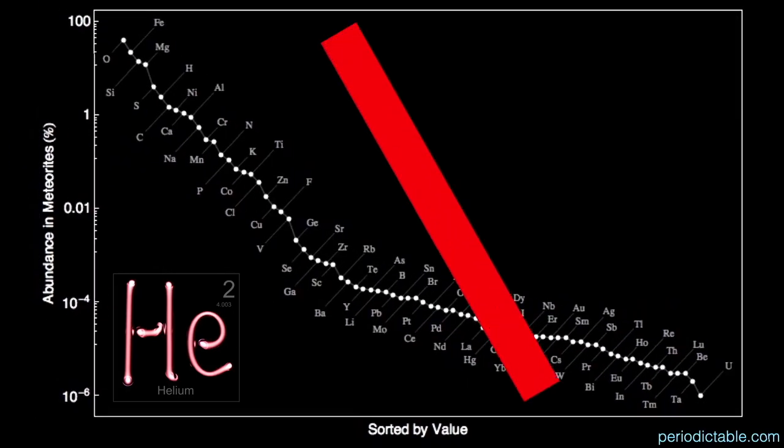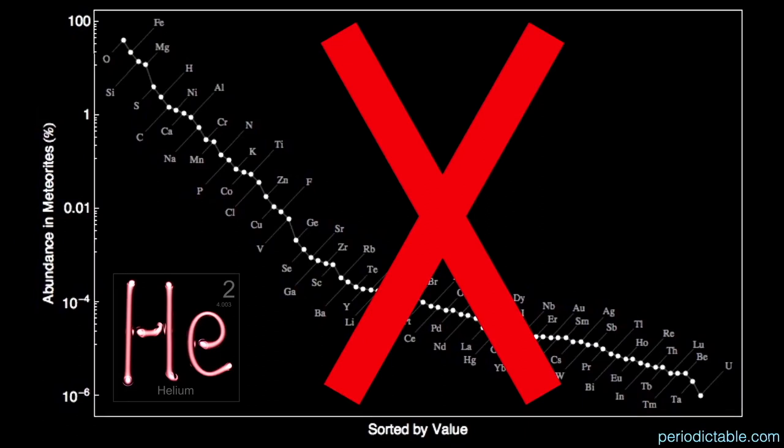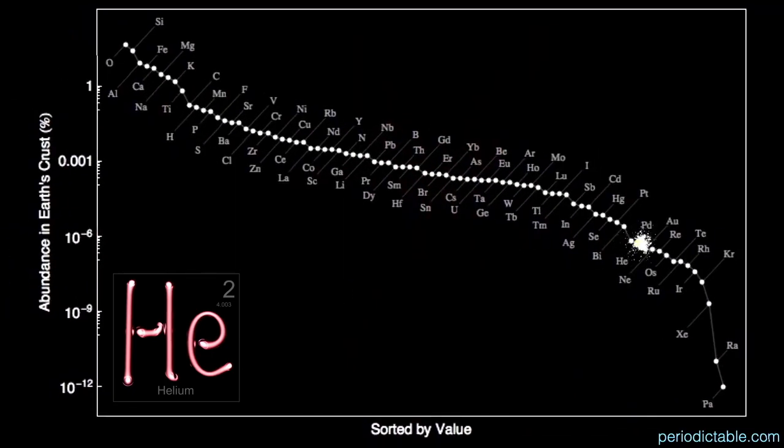Interestingly, it's not found in meteorites at all, but they are small, solid masses. Like meteorites, the crust of the Earth is rocky, but still contains a small amount because it's being generated there, only 5.5 parts per billion.